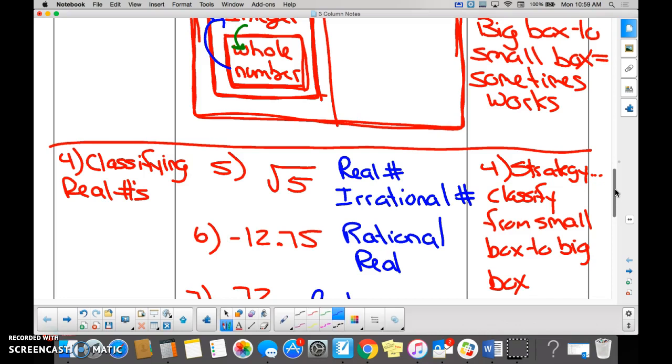On number six, so Jake and Kyle, this is the one where you guys are a little confused and I get it. I gave you negative 12 in 7,500s. There's nothing to calculate, right? So you just use that number to classify.